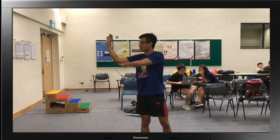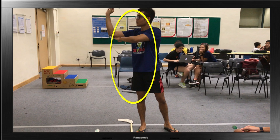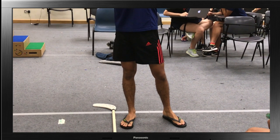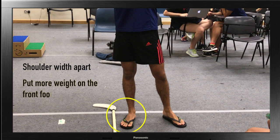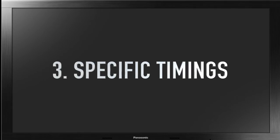For the body: the body will lean slightly forward to get a closer reach to the dartboard. Be careful not to lean forward too much as the learner may lose balance. For the feet: stand shoulder-width apart with the dominant foot parallel to the throwing line. Put more weight on the front foot and use the back foot for balance.